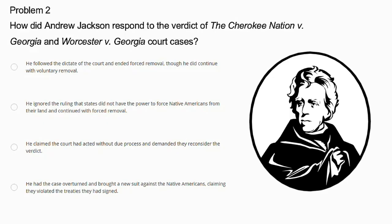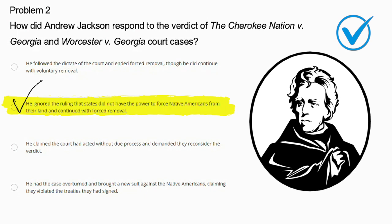Problem number 2. How did Andrew Jackson respond to the verdict of the Cherokee Nation v. Georgia and Worcester v. Georgia court cases? The correct answer is he ignored the ruling that states did not have the power to force Native Americans from their land, and he continued with forced removal. The other options are not correct because Jackson did not demand a reconsideration, he did not overturn the case, and he did not bring a new suit against the Native Americans.